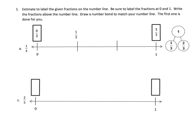Here we're being asked to label the given fractions on the number line. Be sure to label zero and one at the start and write your fractions above the number line. Then draw a number bond to match your number line. The first one has been done for us. We're going to do the next one, starting with zero-fifths and marching all the way up to five-fifths. Because the denominator is five, we need to cut this line into five intervals: one, two, three, four, five. That's pretty close — I did a good job of estimating.